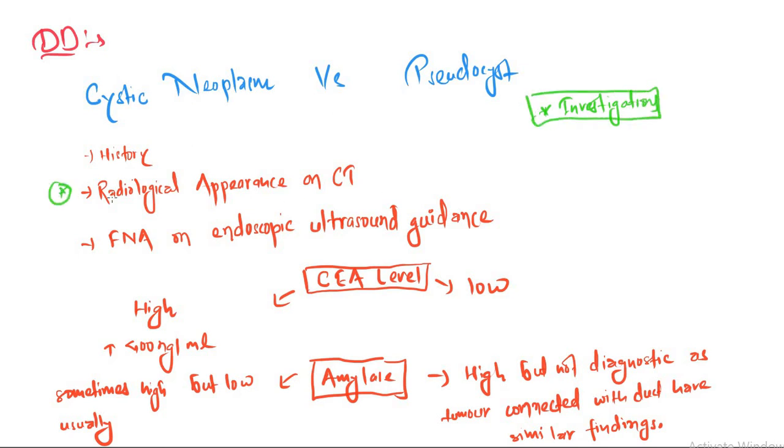Talking about investigations: we have CT, FNA on ultrasonography guidance, and if it is not available, we're going to do percutaneous fine needle aspiration. Another thing you can do is cytology after FNA: we can check CEA level, amylase level, and we can perform cytology.